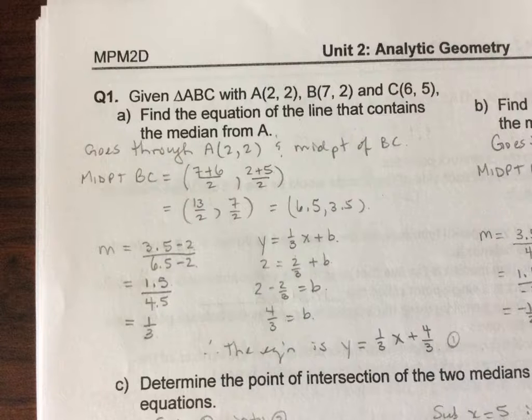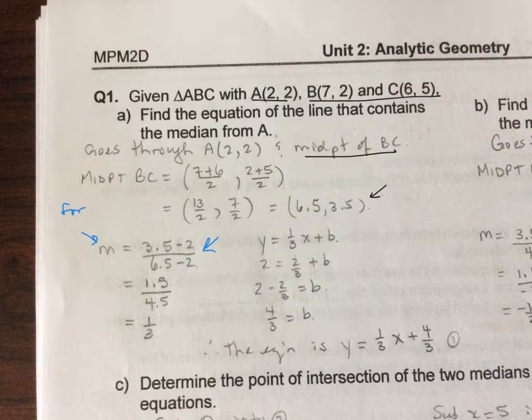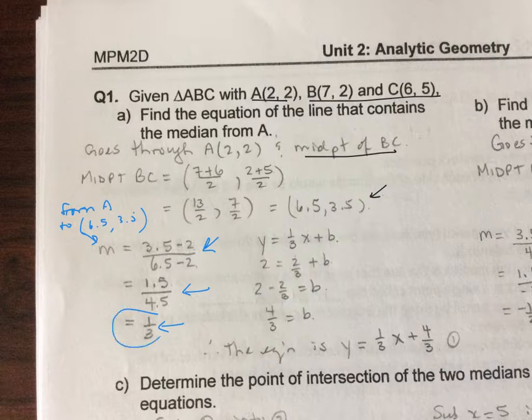Question number one, we want to find the equation of the line that contains the median from point A to side BC. So that means we need to find the midpoint of BC, which is what I've done here. Now I took that to decimal form, only because that's a little bit simpler to work with. I calculated the slope from A to that midpoint of 6.5 comma 3.5. When you put that in your calculator, that's really poor form to have a decimal in a fraction. So if we actually simplify that, that is a slope of 1 third.